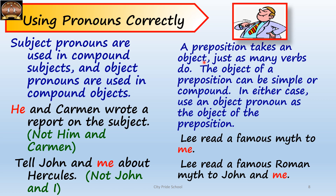A preposition takes an object just as many verbs do. The object of a preposition can be simple or compound, and in either case, use an object pronoun. Since it is an object of a preposition, we will not use subject pronouns after the preposition. For example, 'Lee read a famous myth to me,' not 'to I' — 'I' would be wrong here. 'Lee read a famous Roman myth to John and me' — here 'me' is part of a compound object.